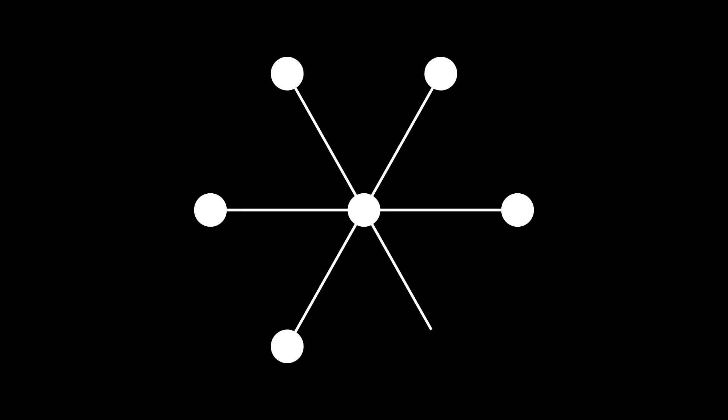A centrality measure is a way of measuring importance of a vertex in a graph. For example, if we're looking at this graph right here, it's pretty clear which vertex is the most important.